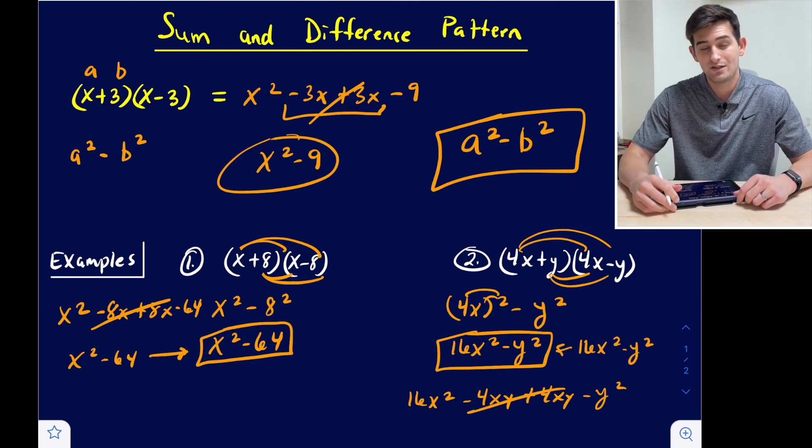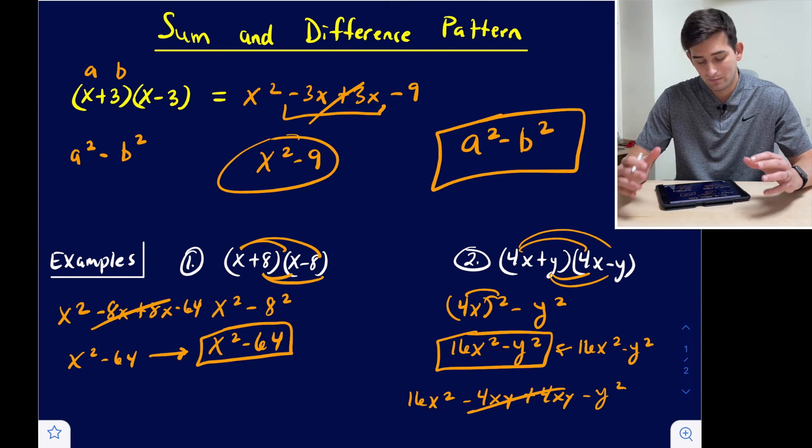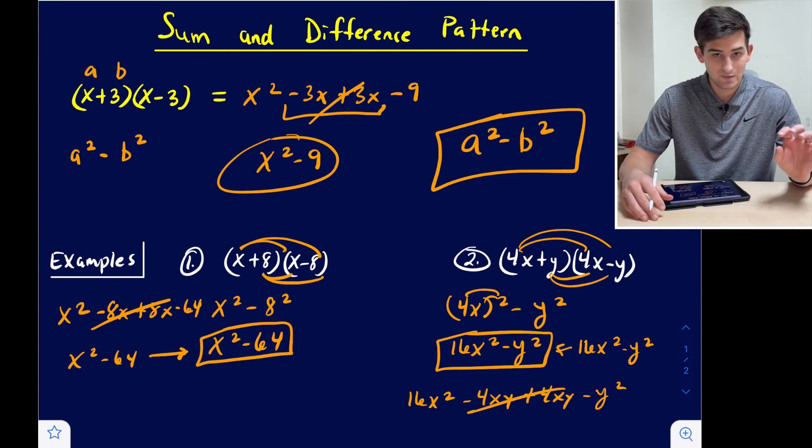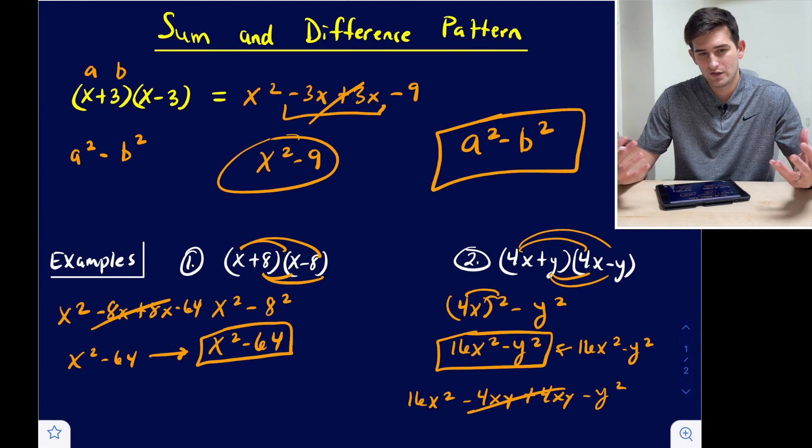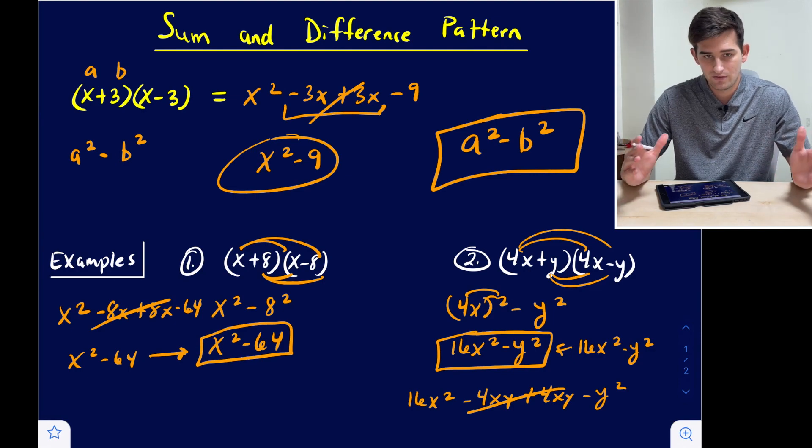And that's how you use the sum and difference pattern to multiply binomials that have the same two terms, a and b, where one is addition and one is subtraction.